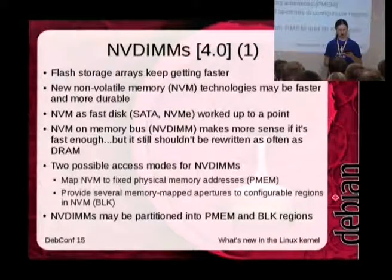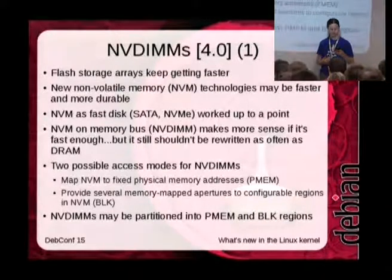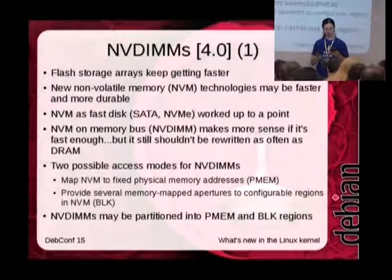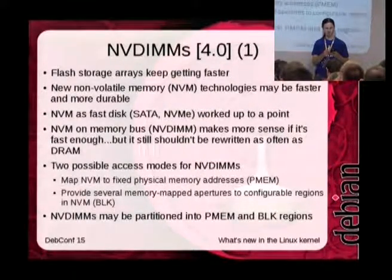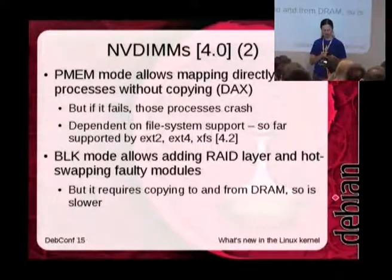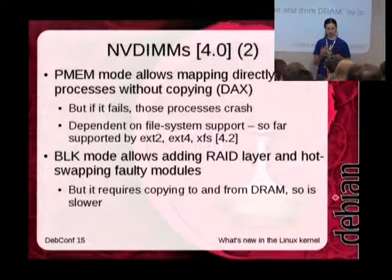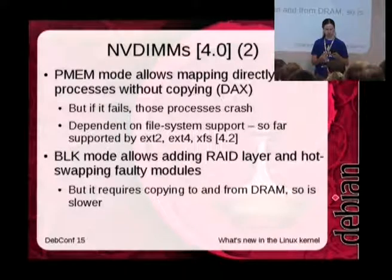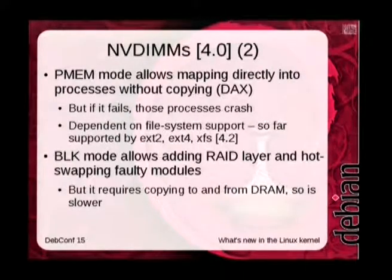There are two different ways of dealing with NVDIMMs. One is PMEM — persistent memory mode — where you map the entire block of flash memory into ordinary physical memory space, and then use the MMU to map that directly into processes accessing data on the NVDIMM. The other is BLK — block mode — where only the kernel accesses the memory directly, accessing only a small portion at a time. You can also split your NVDIMMs into regions accessed in either mode. With block mode, it's less efficient but you can put a RAID layer over multiple NVDIMMs for more reliability.